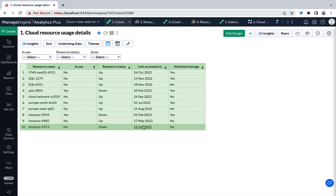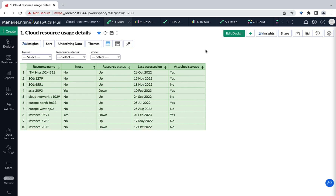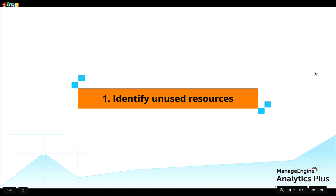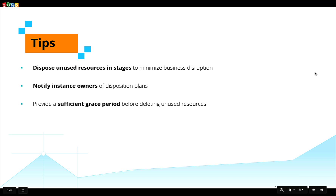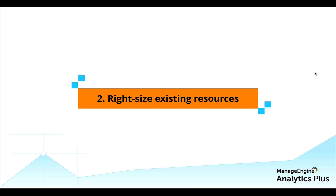This visualization analyzes every cloud resource utilized across your organization to quickly identify instances unused for three months or longer. Beyond flagging unused instances, IT administrators can identify unused storage volumes that can be downgraded or reassigned to maximize utilization. It is good practice to implement this disposition process in stages to minimize disruption to daily business operations. Notify instance owners of disposition plans, and after a grace period, delete the unused instances to avoid shadow IT resources.